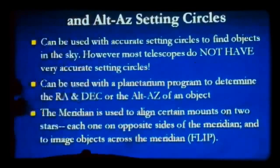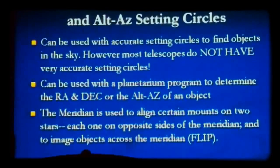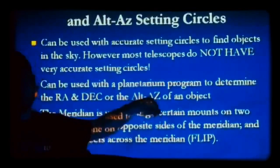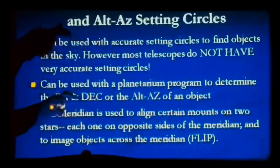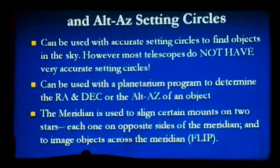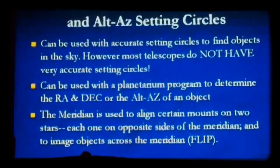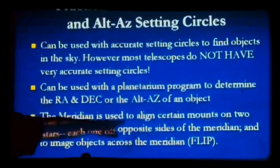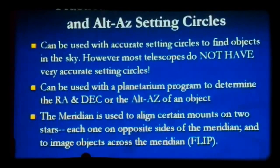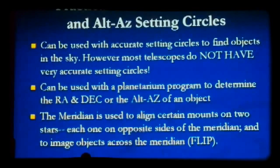If you have a planetarium program like Stellarium, it's very handy for finding the right ascension and declination — especially the alt-az — of an object. We probably need a computer program for alt-az coordinates because they change constantly. If you have a computerized go-to telescope that automatically finds and tracks objects, or a digital push-to telescope, the meridian is used to align certain mounts on two stars, each on opposite sides of the meridian. For a two-star alignment with a go-to or push-to telescope, it's best to pick one star from the east and one from the west of the meridian.